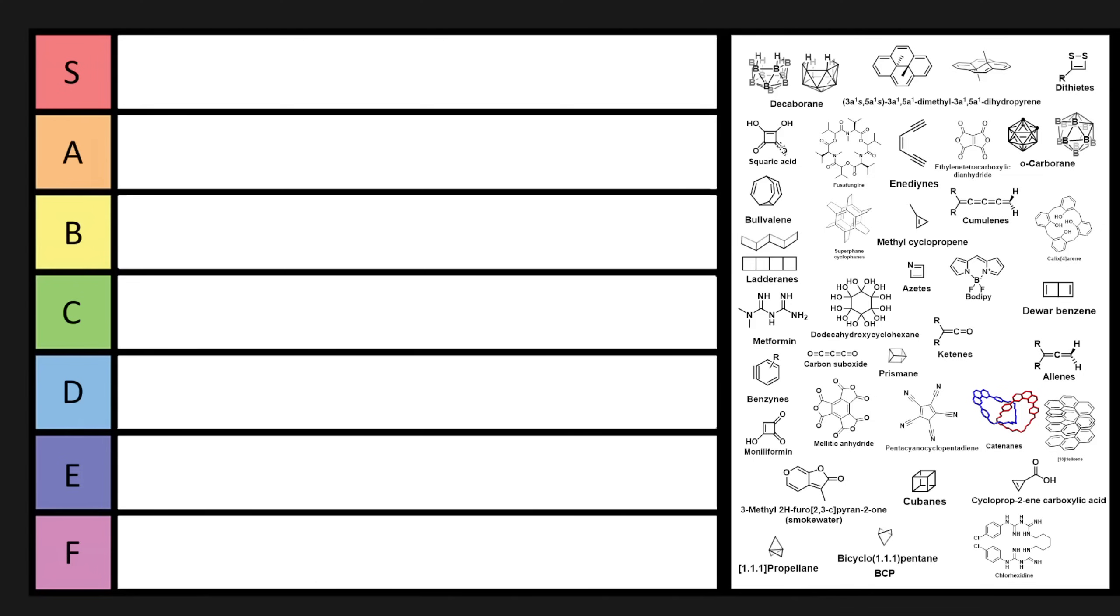I think squaric acid is pretty cool looking, but it's not cursed when we start looking at some of the other ones on this list. So squaric acid might have some applications, especially as it has analogs such as squaramides, but I think we're going to have to put squaric acid in D tier because it's relatively simple.